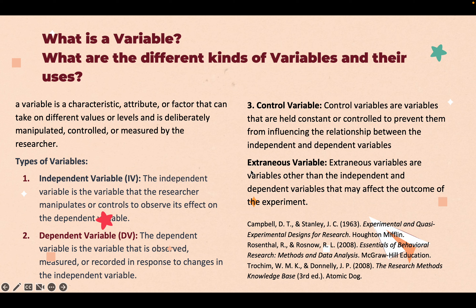The fourth type is extraneous variables — these are variables other than the independent and dependent variable that may affect the outcome of the experiment. Researchers aim to control or account for these variables to enhance the internal validity of the study.